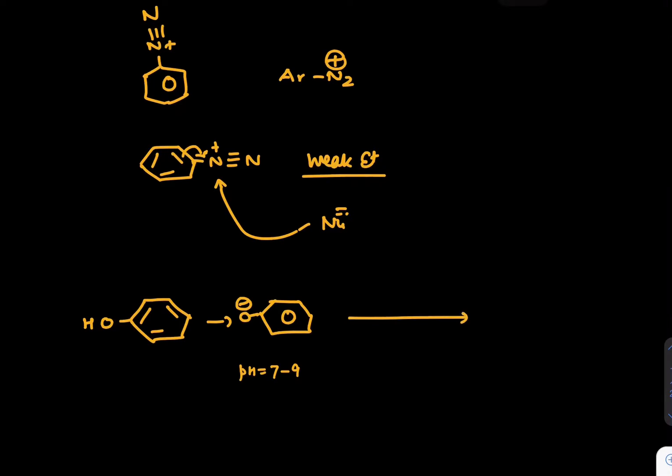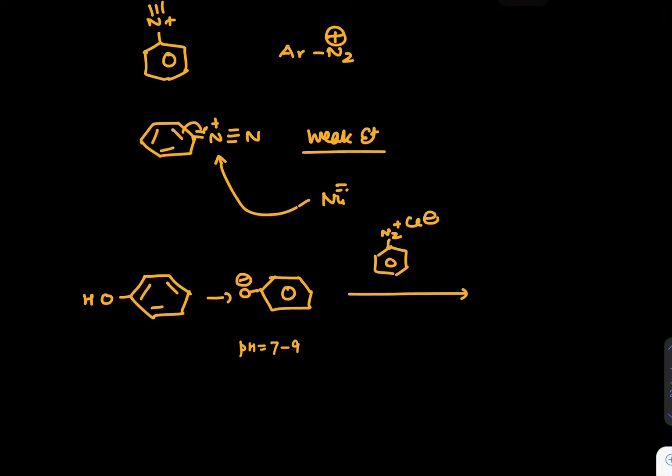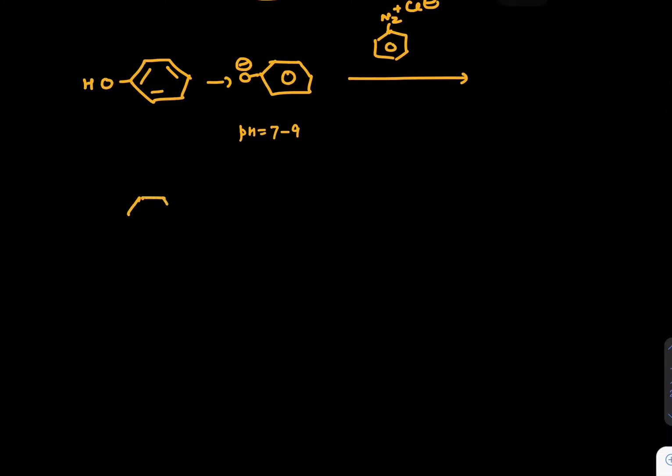At this phenoxide, if we provide diazonium, which is Ph-N2 plus Cl minus, so this can attack on Ph-N2 plus Cl minus. And what will be the complete mechanism of attack? Let's see.